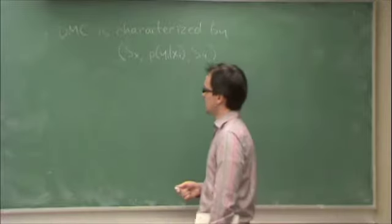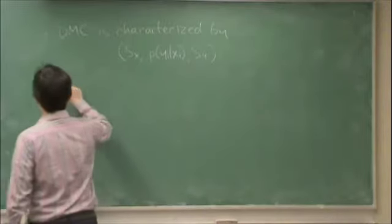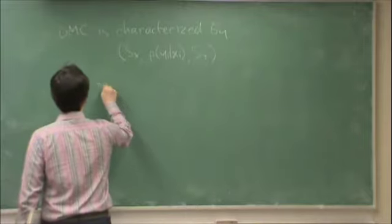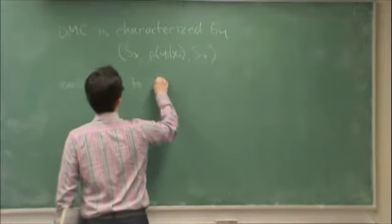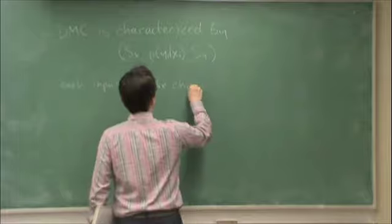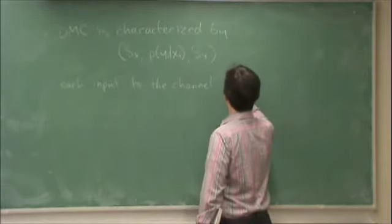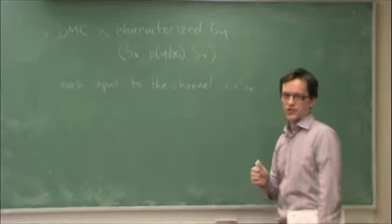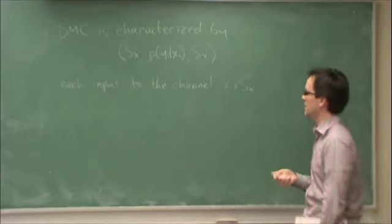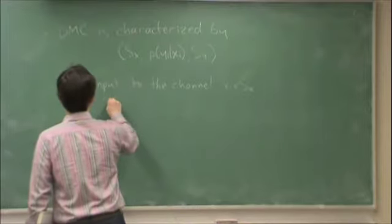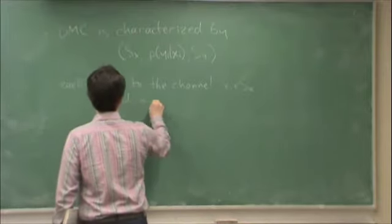So the transition— each input to the channel, xi in Sx, in other words, for each symbol that I put into the channel, is called a channel use.